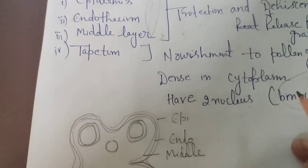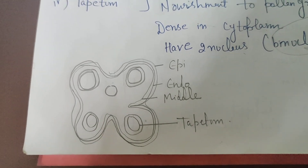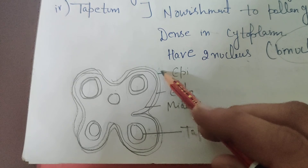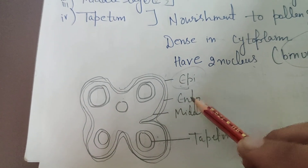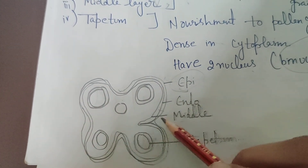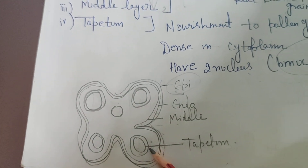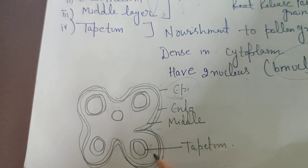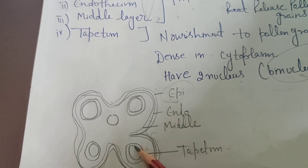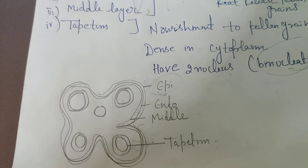If you look at the structure of the microsporangia, the outer layer is the epidermis, the second layer is the endothecium, the third layer is the middle layer, and the inner one is called the tapetum. The first three layers provide protection, while the tapetum provides nourishment.